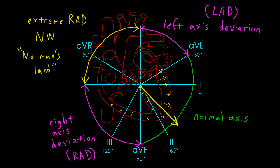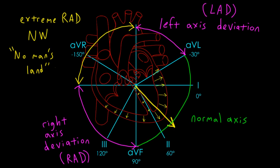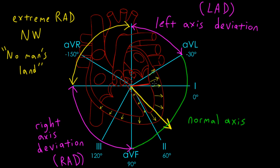Determining the QRS axis each time you read an EKG is helpful because it gives you important information as to what could be going on with the patient's heart. For example, if I drew a QRS axis that looked like this — would you call that a normal QRS axis? Yes, it is a normal QRS axis; it falls within the normal range.